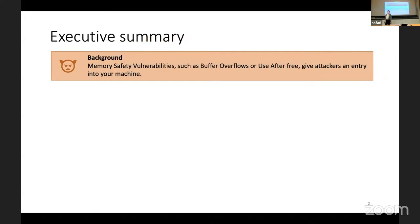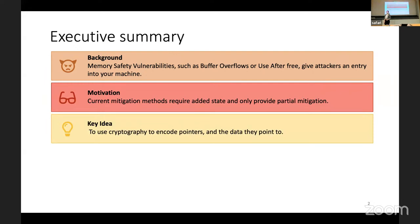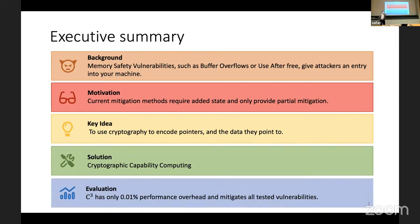Let's start with the executive summary. To give you some background, loosely typed programming languages such as C or C++ introduce memory safety vulnerabilities, for example buffer overflows or use-after-free, and those can give attackers an entry into your machine. The problem this paper mainly aims to solve is that current mitigation systems against these violations require a lot of added state and only provide partial mitigation. The key idea is to use cryptography to encode pointers and the data that they point to. When simulating this, the authors found that C-cubed has very low performance overhead and mitigates all tested vulnerabilities.